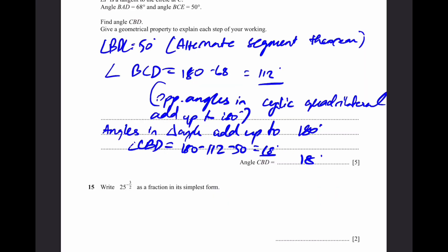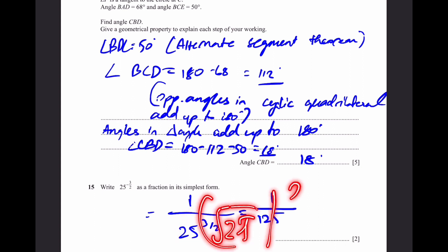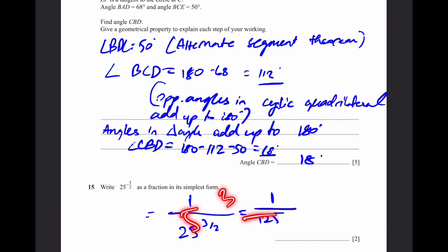Question 15. Write 25 to the power minus 3/2 as a fraction in simplest form. Since we have a negative power, we take the reciprocal: 1 over 25 to the power 3/2. That's simply 1 over 125, since 25 to the power 3/2 is the square root of 25, cubed — that's 5 cubed, which is 125. So 1/125 is our answer.